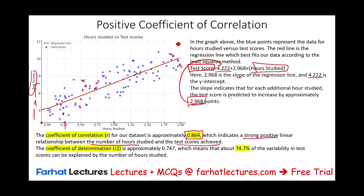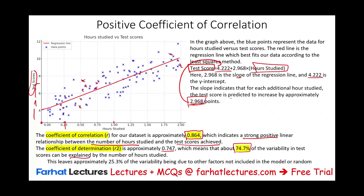The coefficient of determination is approximately 0.749, which means 74.7% of the variability in test scores can be explained by the number of hours studied — and that's not bad at all. We're about 75% sure that relationship holds, which is a strong relationship. This leaves 25.3% of the variability due to other factors not included in the model or random variation — meaning some other factor affects that relationship about 25.3% of the time.